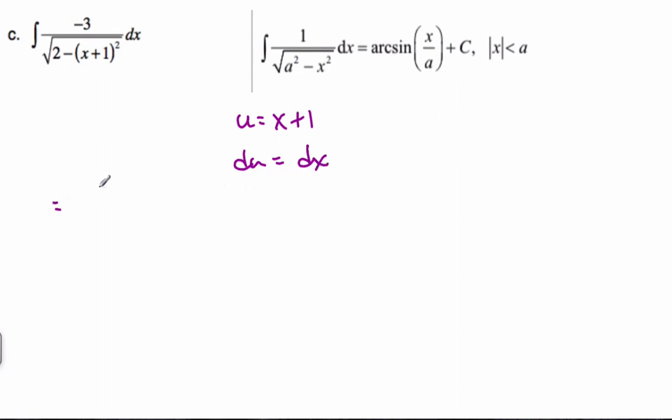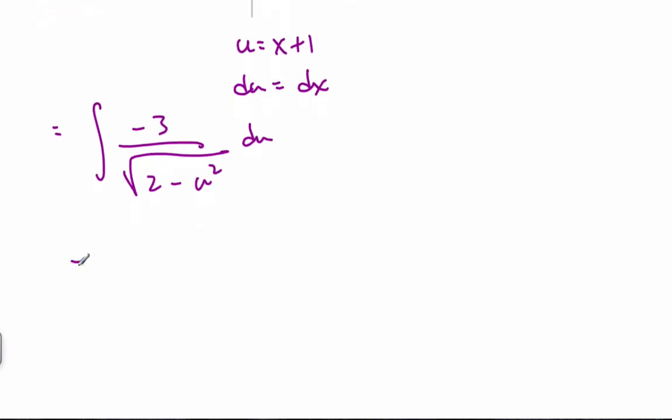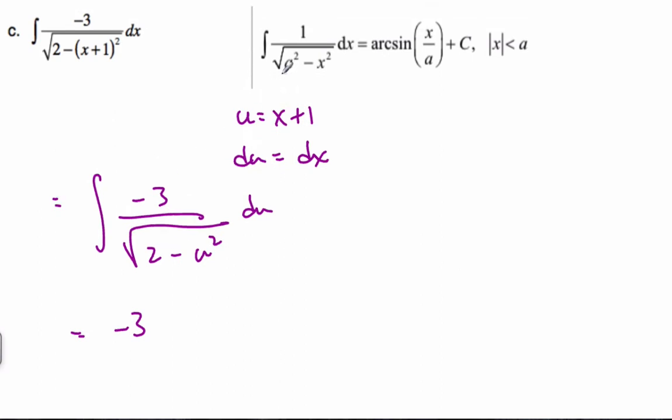And so then it's going to be the integral of negative 3 over the square root of 2 minus u squared du. Well, this is my a squared value. This is just a coefficient. I can pull out to the front. And using my formula, negative 3, this is just the coefficient in front, arcsin.